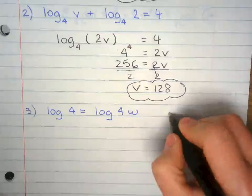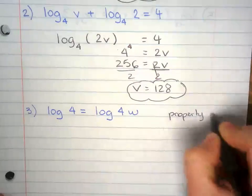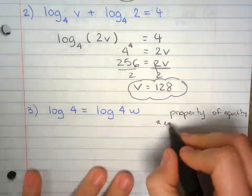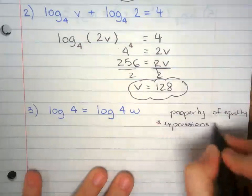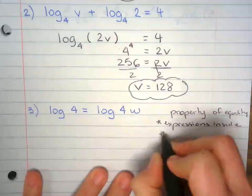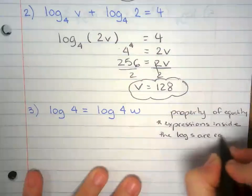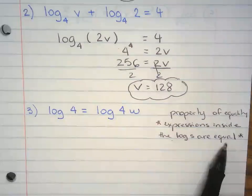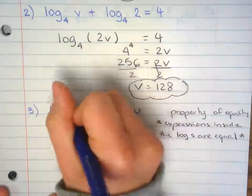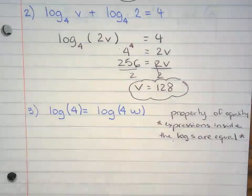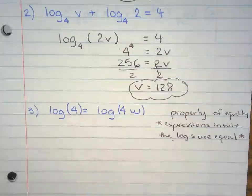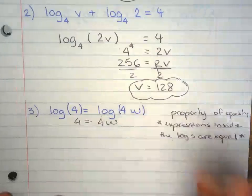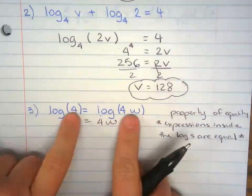Now this one, we're going to apply the property of equality. The property of equality states that expressions inside the logs are equal. So these two are equal to each other. We can make the log go away and rewrite this as 4 equals 4w.